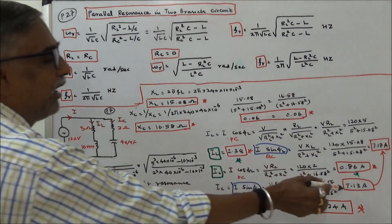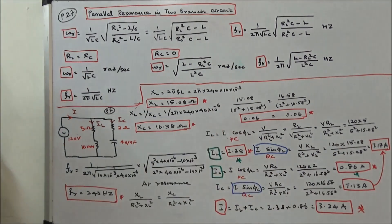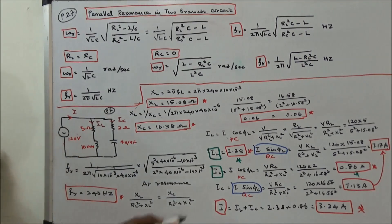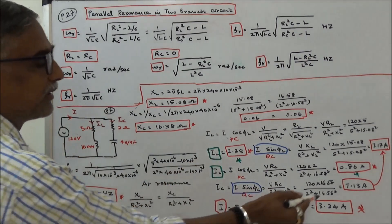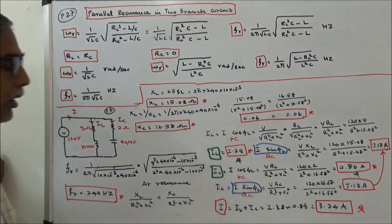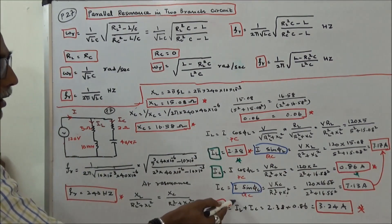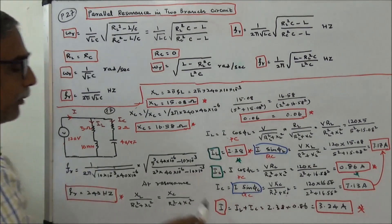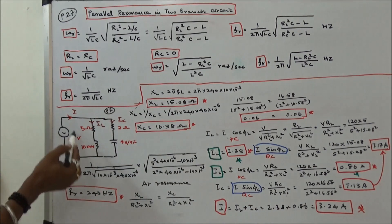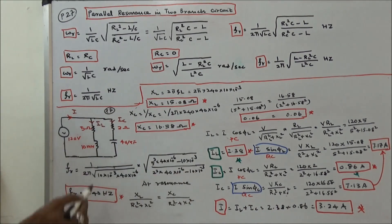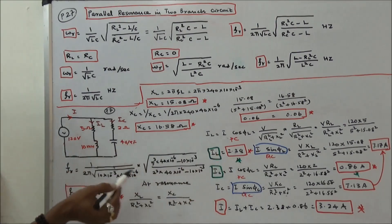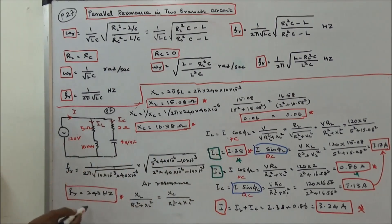The two quadrature components are almost equal and in opposite directions, so they cancel. We only need to add the phase components: I = phase component of I_L + phase component of I_C = 2.38 + 0.86 = 3.24 A. So the supply current I = 3.24 A, I_L = 2.38 A, I_C = 0.86 A, and the resonant frequency is 240 Hz.